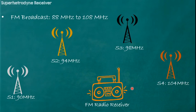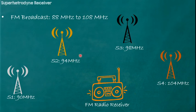Similarly, in case of an FM radio system, which uses frequency modulation as a transmission scheme, FM broadcast occurs in the frequency range of 88 MHz to 108 MHz. Any radio station will transmit its signal on one of the frequencies within this band. For example, station 1 transmits on 90 MHz, another on 94 MHz, another on 98 MHz, and the last on 104 MHz. So different stations transmit on different frequencies, all falling within this band.